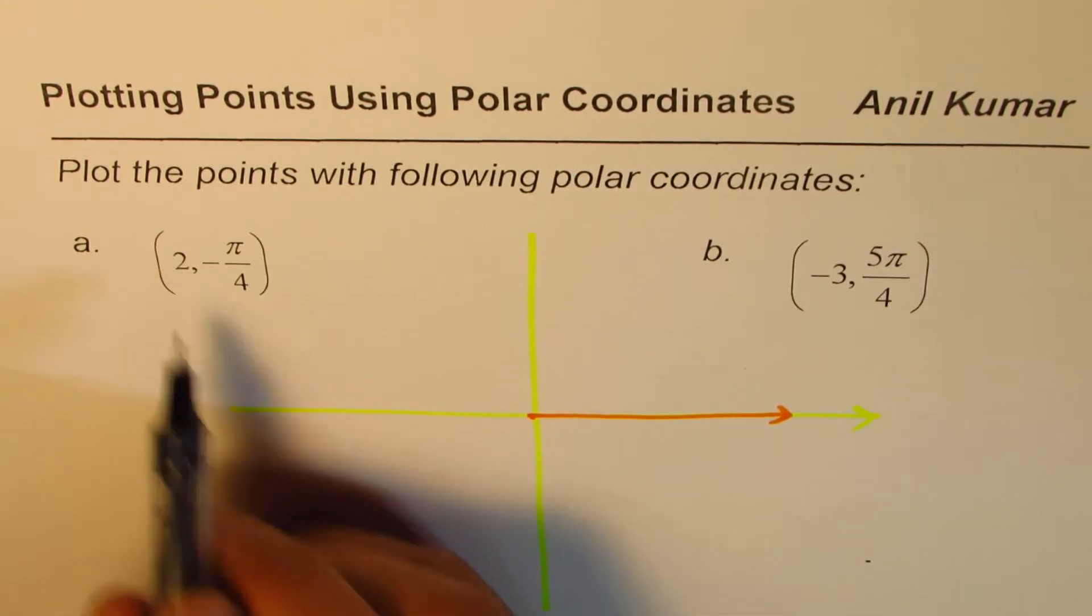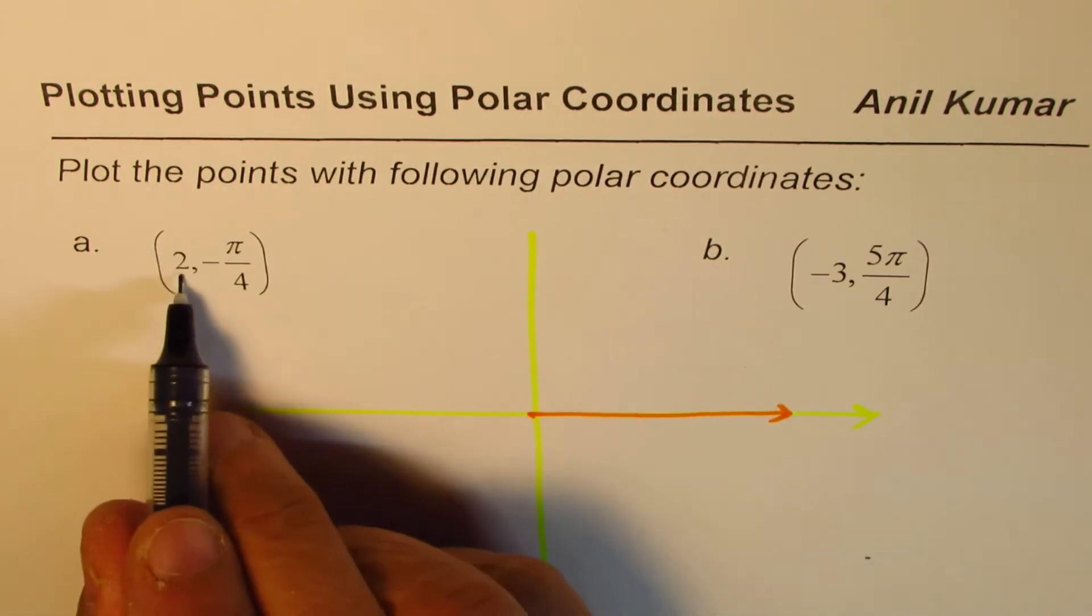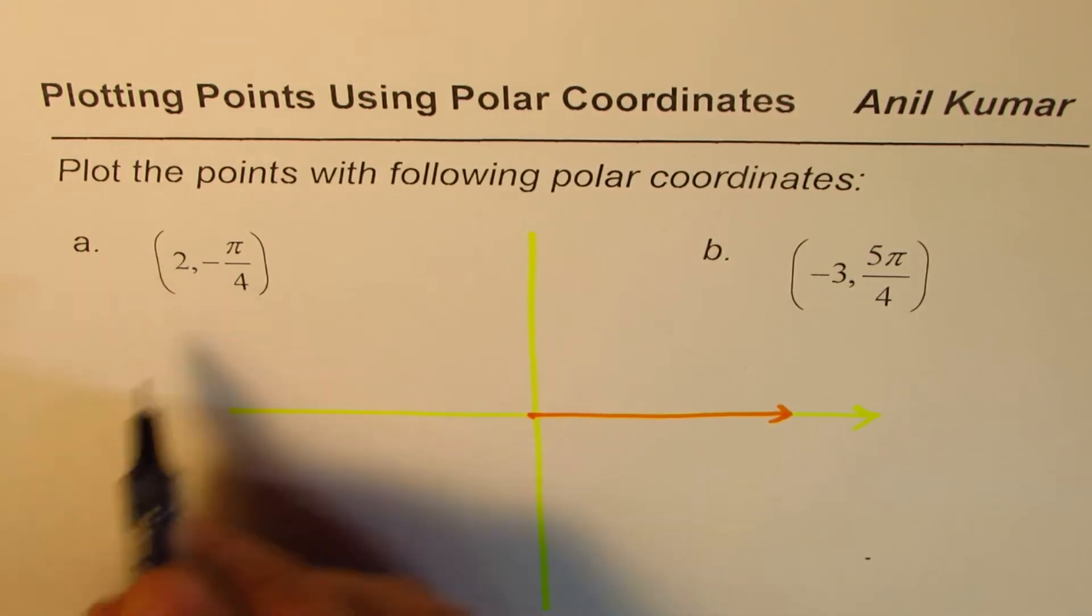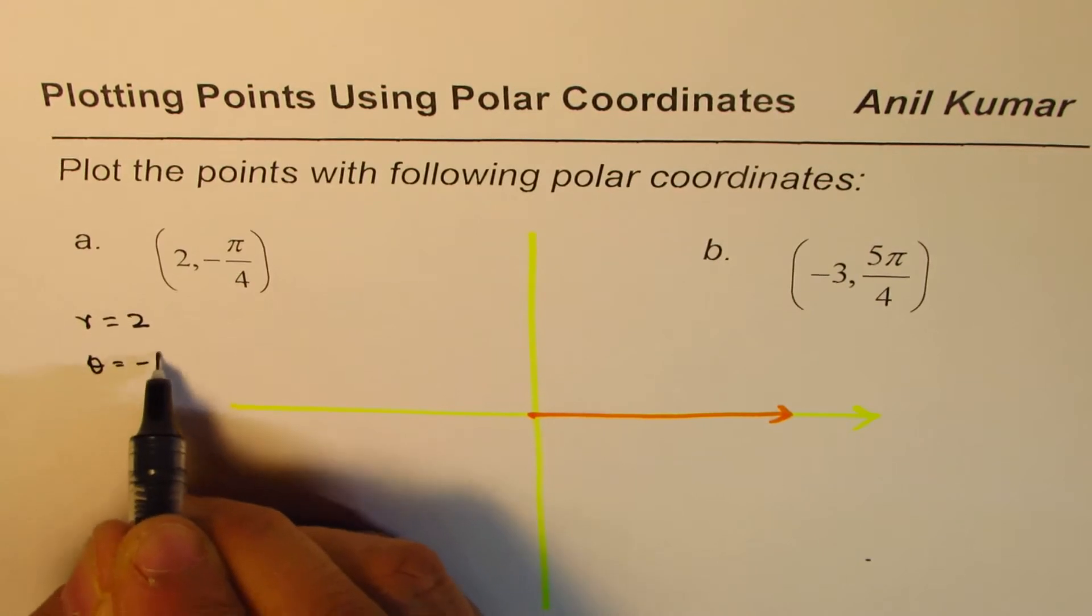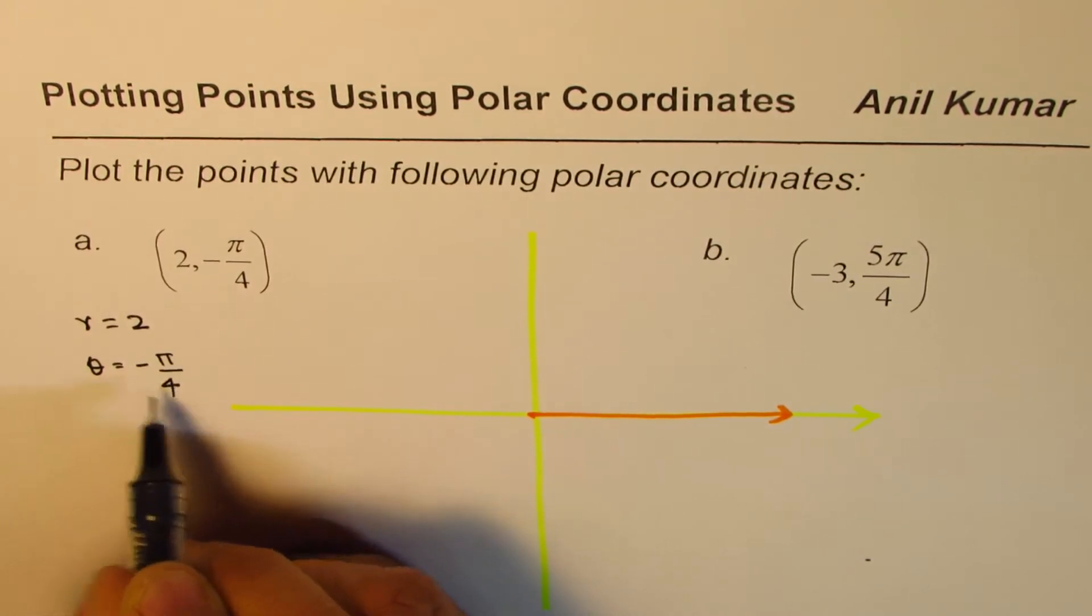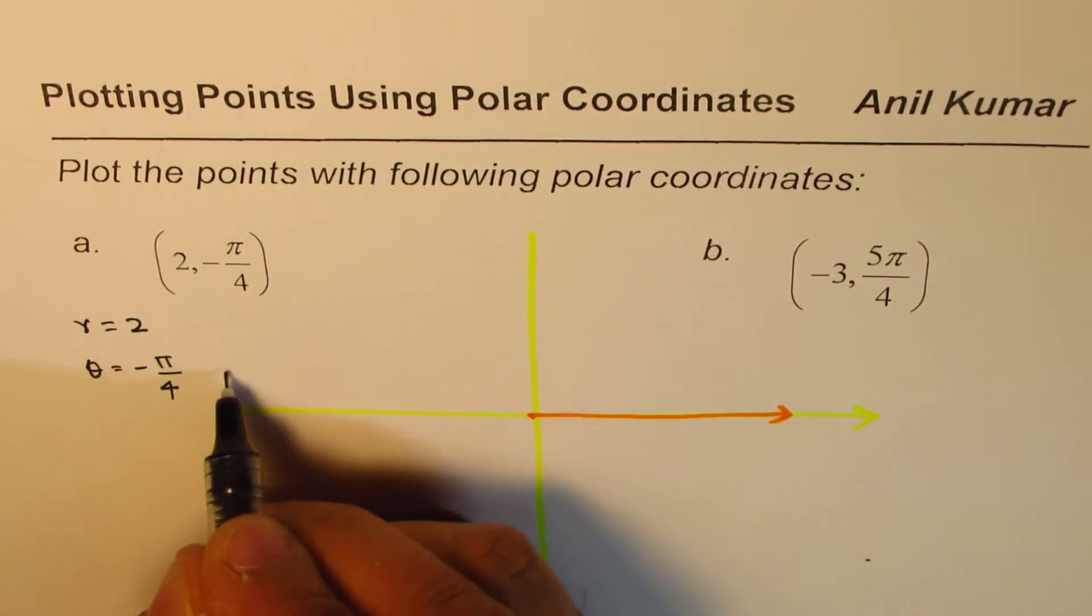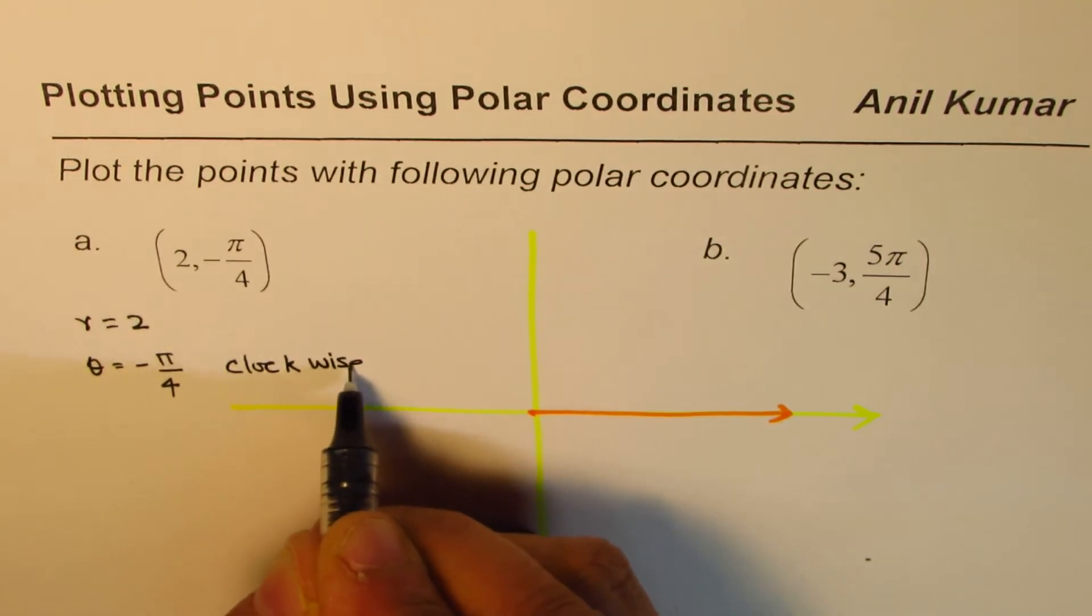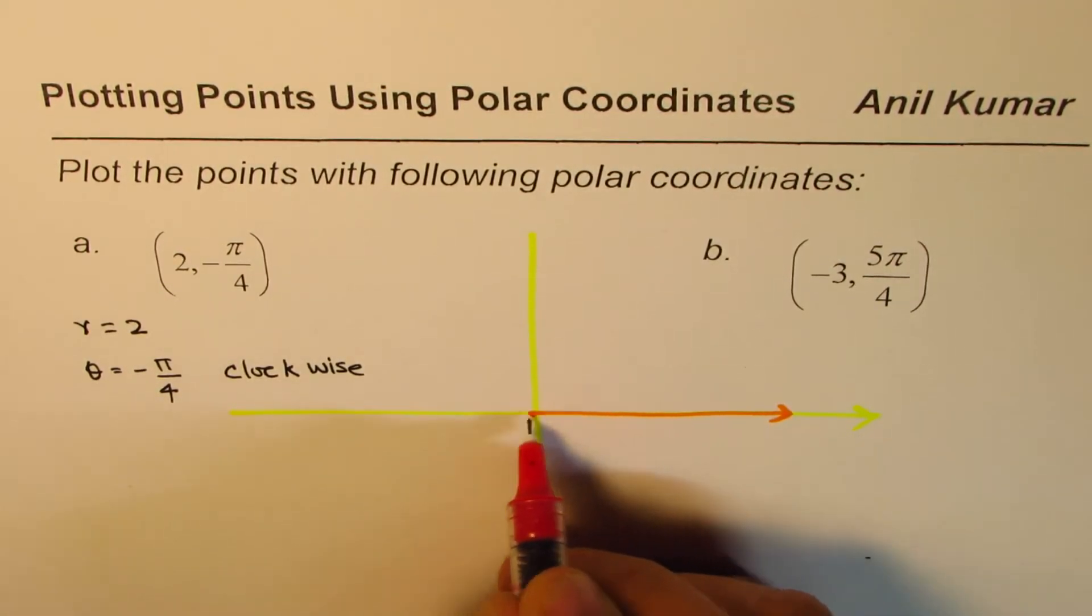That means the length of our line segment or distance from the pole is 2 units and -π/4 is theta, the angle. In this case R is 2 and theta is -π/4. Now what is the meaning of minus? Minus means that we should go clockwise. This is the clockwise direction which is minus. So -π/4 really means that we have to move from the initial arm clockwise π/4.